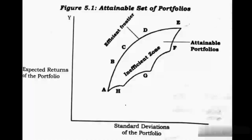We can see the efficient frontier with the help of a graph. The x-axis represents the standard deviation or risk of the portfolio, and the y-axis represents the expected returns of the portfolio. In the risk-return space, there are eight portfolios: A, B, C, D, E, F, G, and H. These eight portfolios constitute the attainable portfolios or portfolio opportunity set.